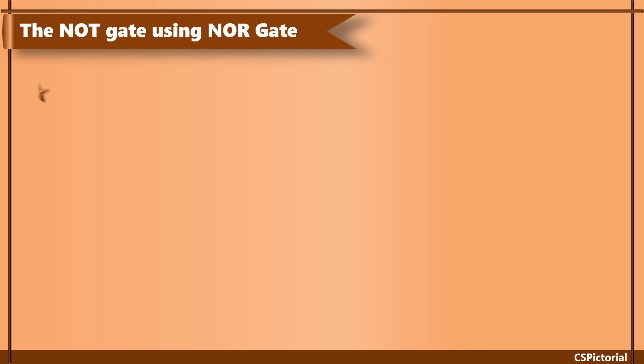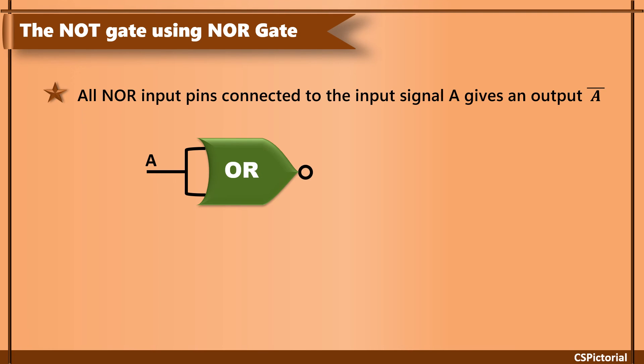The NOT gate output can be produced by connecting all NOR input pins to the input signal A. This gives an output of NOR gate A bar.